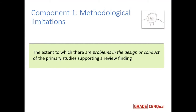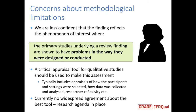Let's start with methodological limitations. As Claire mentioned, we defined this as the extent to which there are problems in the design or conduct of the primary studies that support an individual review finding. We might be less confident that the finding reflects the phenomenon of interest — the focus of the review — when the primary studies underlying a review finding have problems in the way they were designed or conducted.